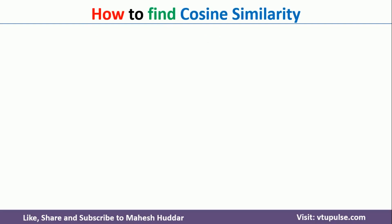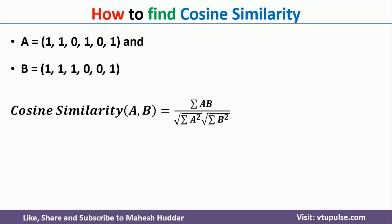First, we will discuss how to find the cosine similarity. To find the cosine similarity, we need to use this equation: the cosine similarity between A and B is equivalent to the summation of AB divided by the square root of the summation of A squared, multiplied by the square root of the summation of B squared.